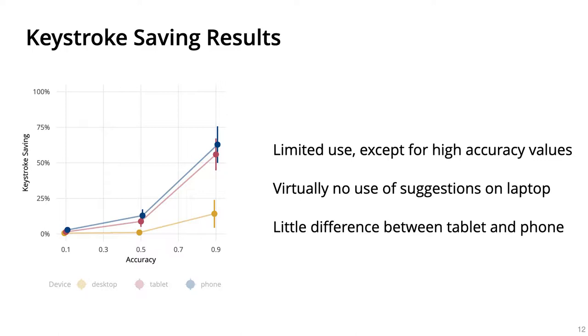Here are some of our results. The colored line indicates the device being used. On X is accuracy. On Y is how much keystroke was saved, which of course is bounded by the accuracy.